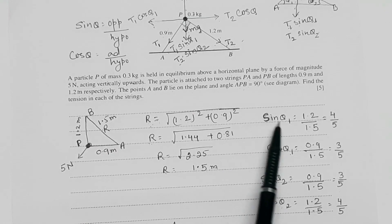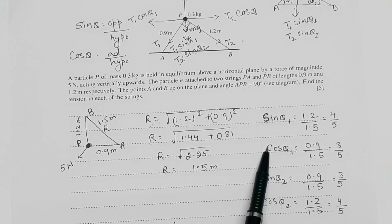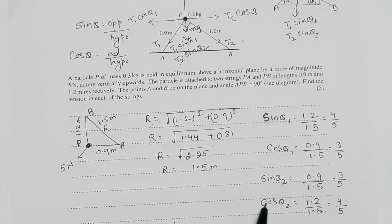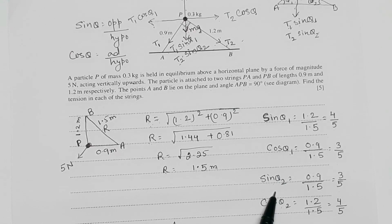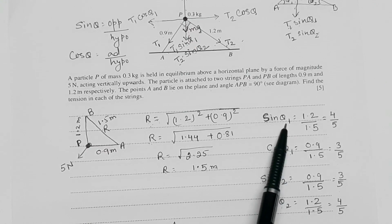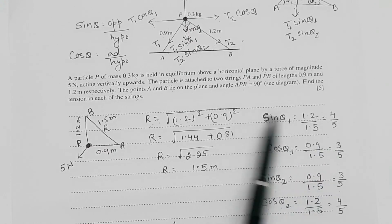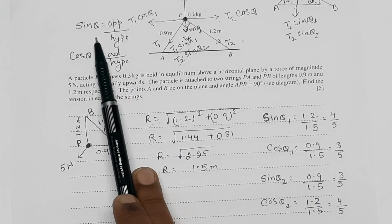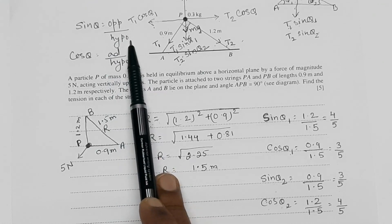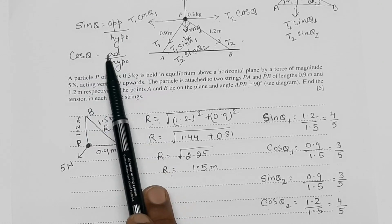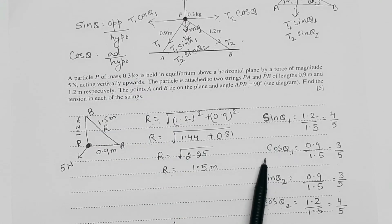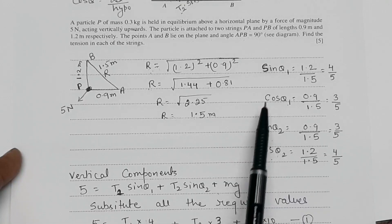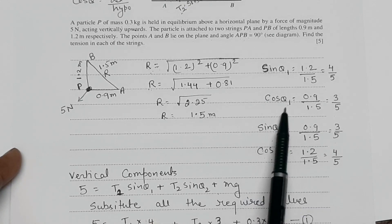Now we will find out the value of sin theta 1, cos theta 1, sin theta 2 and cos theta 2 because we are going to use these angles in our further questions. Sin theta 1 will be equal to 4 by 5, the formula for sin theta I have given here that is opposite by hypotenuse and cos theta will be equal to adjacent by hypotenuse. So by using this formula we will get the value of all these.